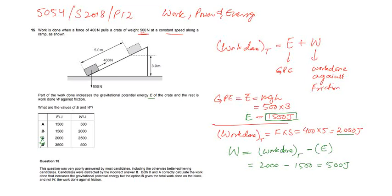2000 Joules is the total work done. So the work done against the friction should be 2000 minus gravitational potential energy. So work done which is 2000 minus gravitational potential energy which is 1500. So the work done against the friction is 500 Joules. So what happened in the exam?